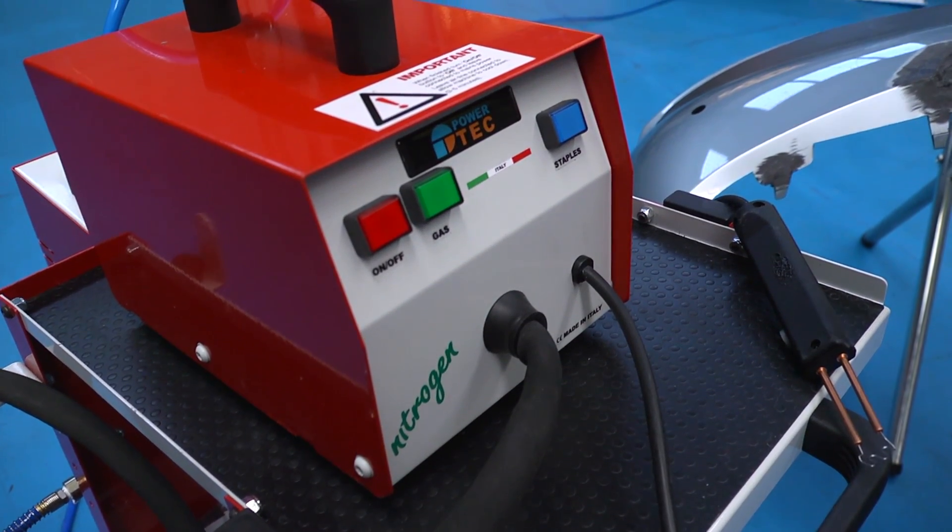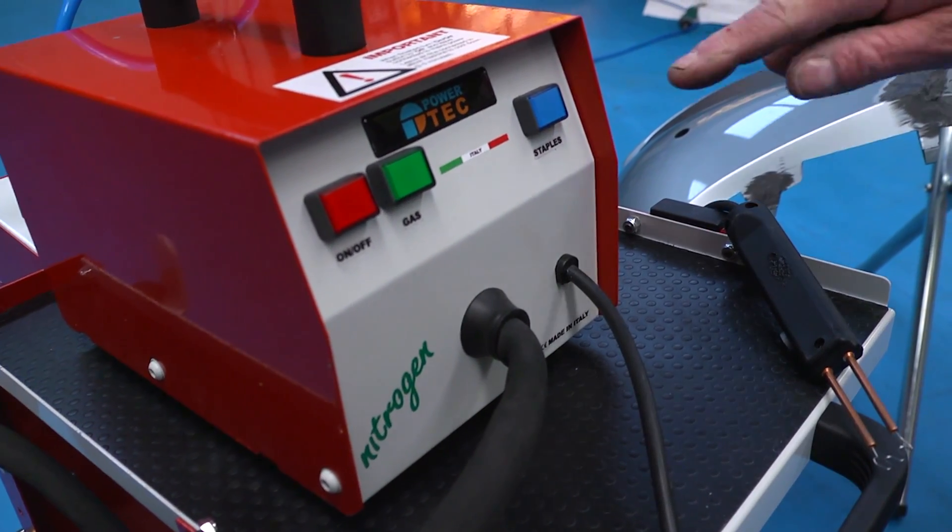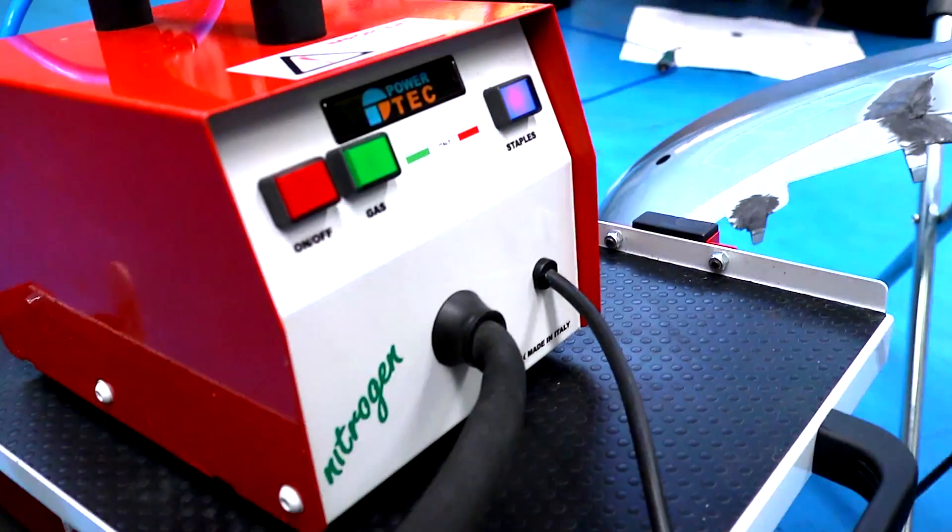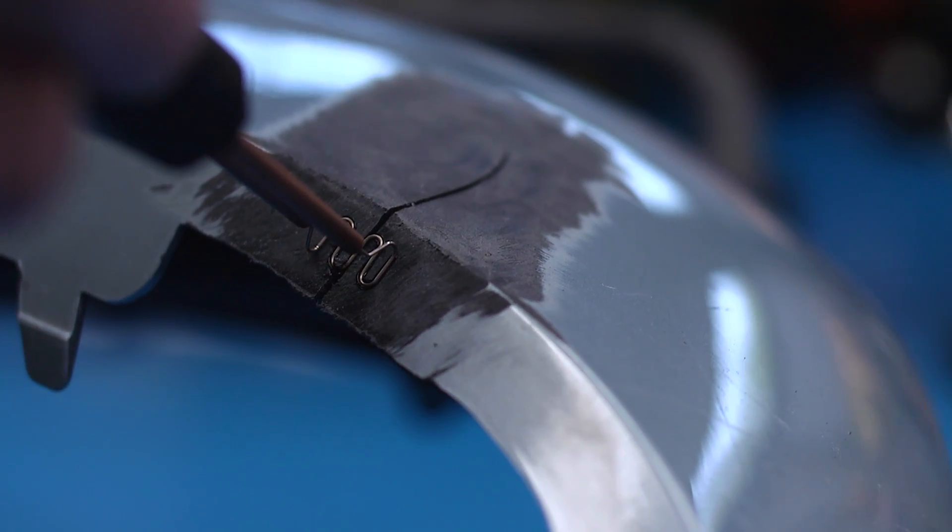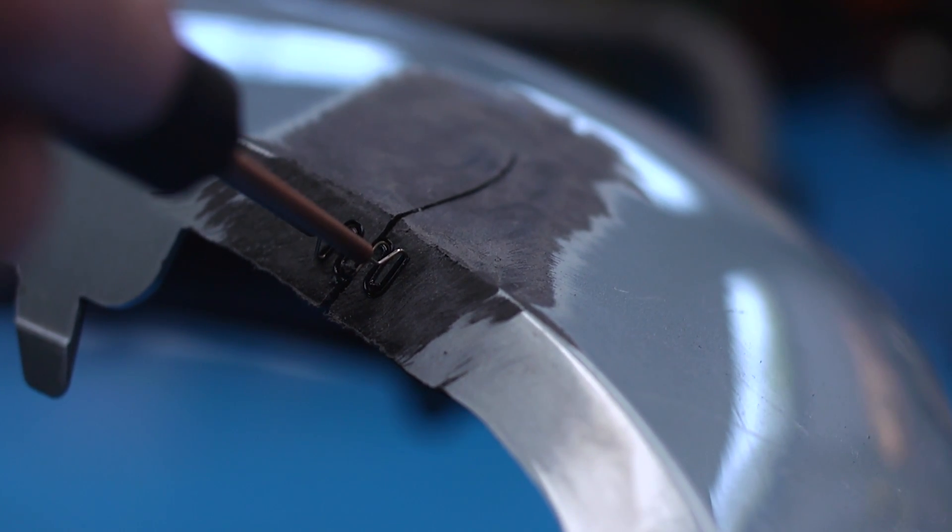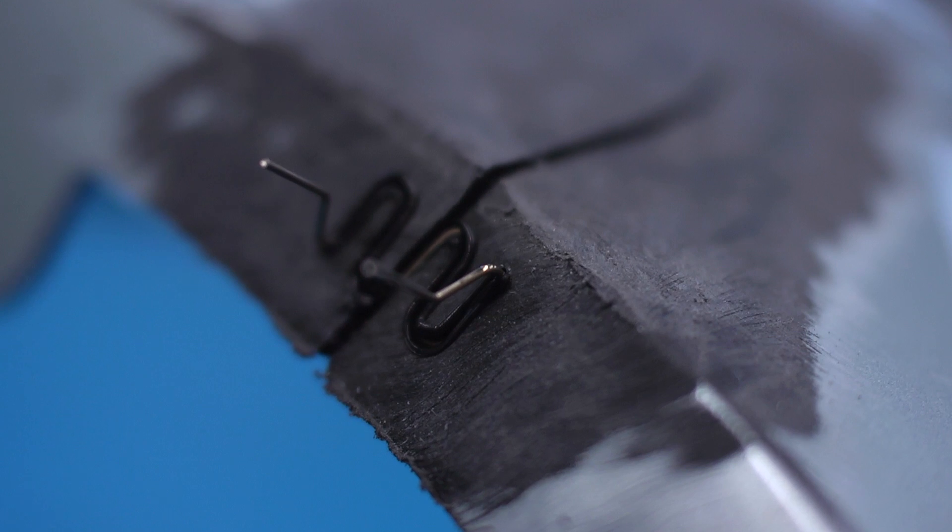The PROTEC nitrogen welding unit comes with an integrated hot stapler. This is used to stabilize and secure the area during the repair process. The staples can be left in the repair to reinforce or removed after the repair if a plastic only repair system is required.